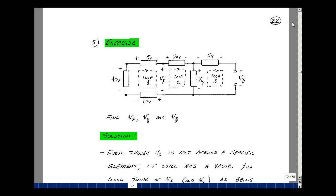Consider the following example we're going to solve for three voltages, V sub x, V sub y, and V sub z. Now, even though V sub x is not across a specific element, it has a value. You can think of this as really being a resistance of infinity, and likewise over here. I have three unknowns, and let's see if we can find three equations to solve for those.